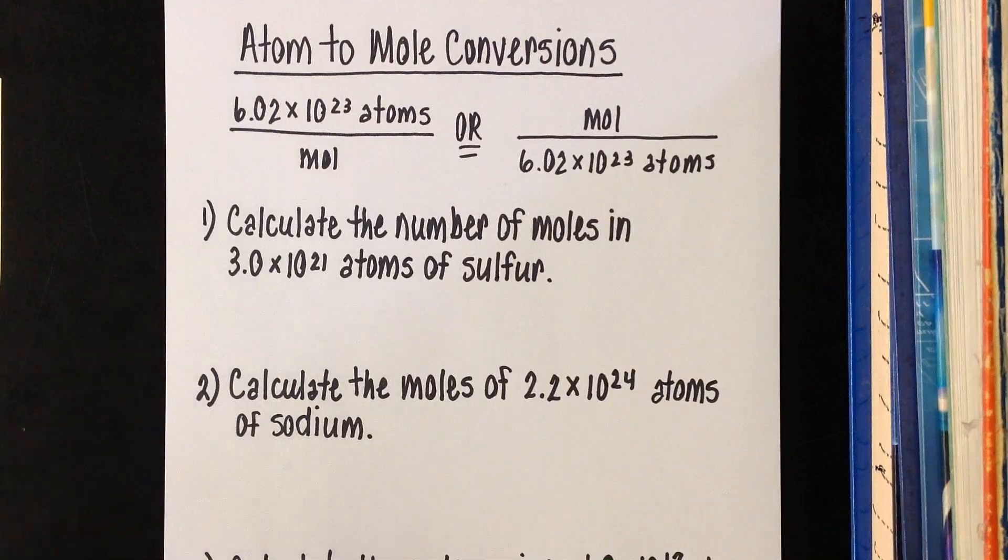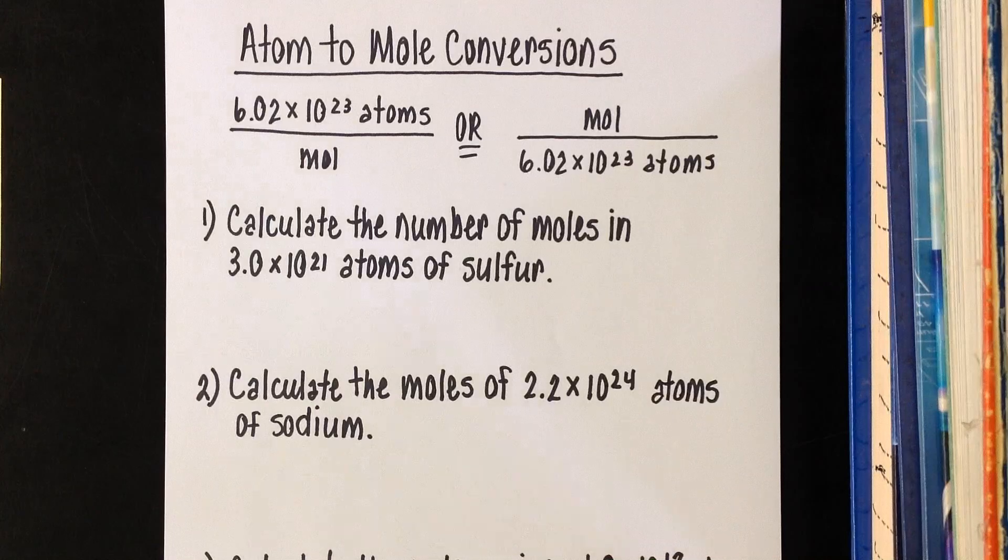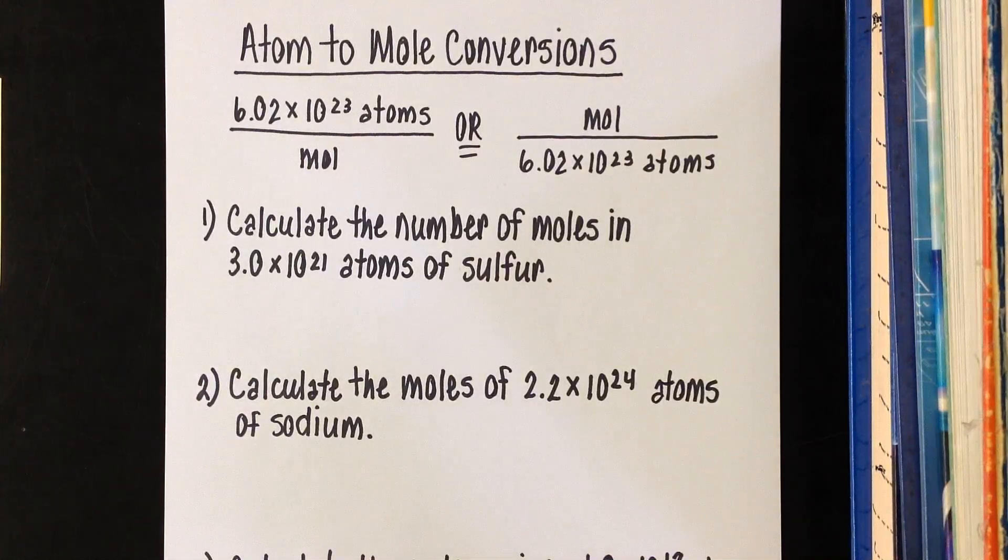I want to remind you that when we're working with atom-mole conversions, the number that we are pulling out of our chemistry toolbox is 6.02 times 10 to the 23rd atoms per mole. We've discussed that is, to get real technical, a ginormous number, really only good for counting extremely tiny things like atoms and moles.